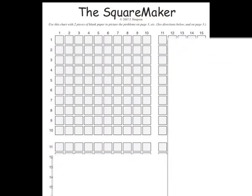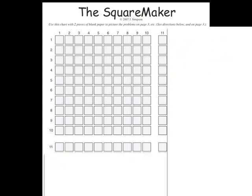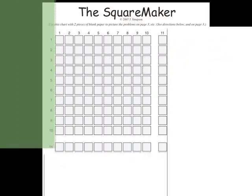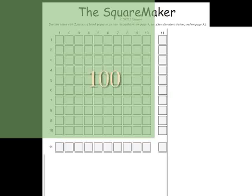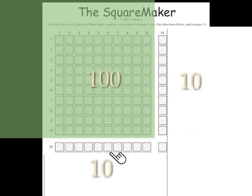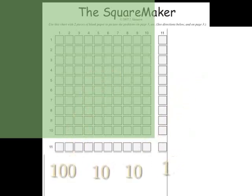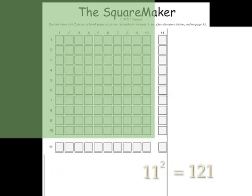Have the students construct and count 11 squared. Add the large box of 100, the vertical and horizontal single rows of 10, and the single box in the corner. 100 plus 10 is 110, plus 10 is 120, plus 1 is 121. 11 squared is 121.